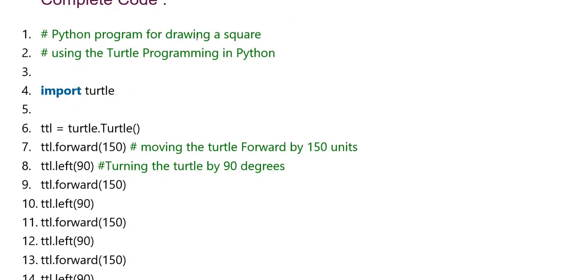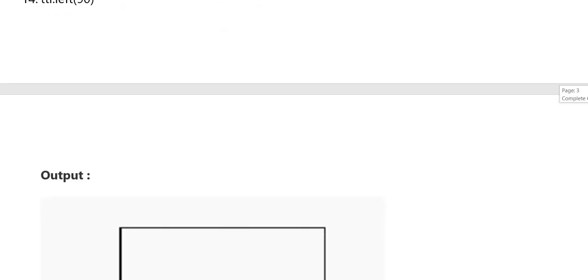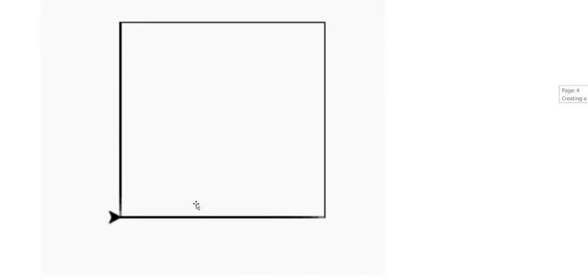Here we have the complete code. Python program for drawing a square using turtle programming in Python. Import turtle, forward and left forward. This way we represent. Here we have output of a square. Here we represent a square. There we go.